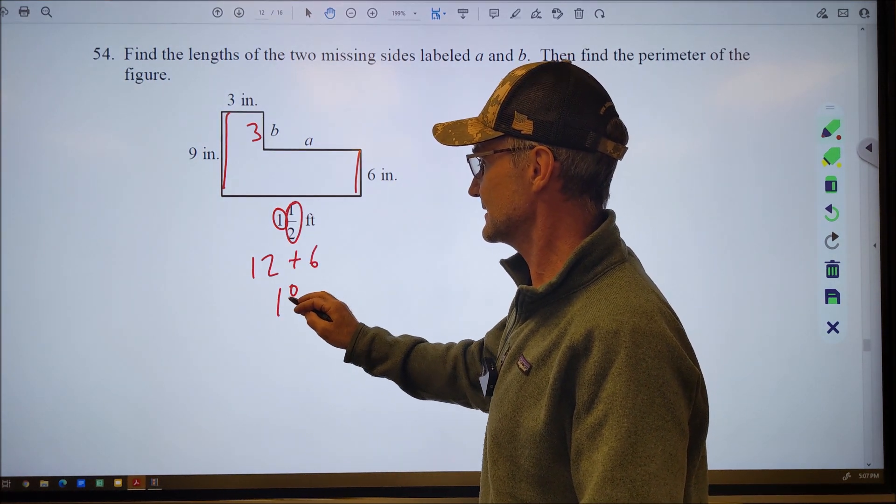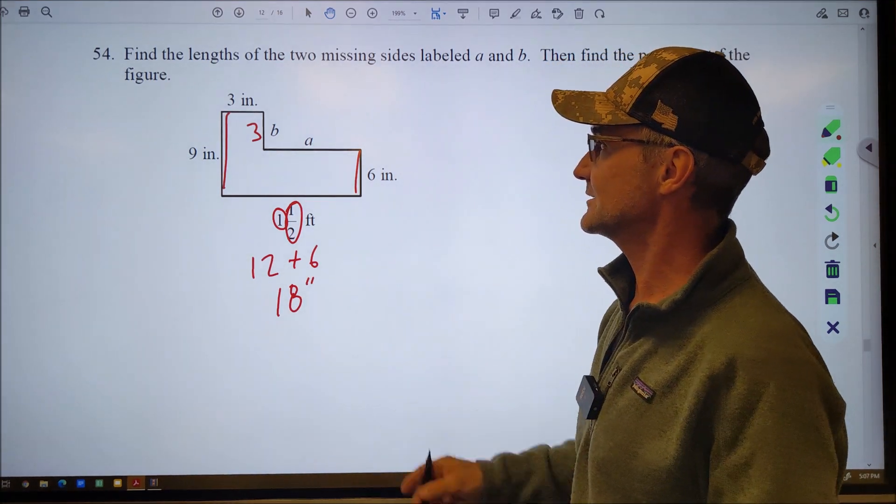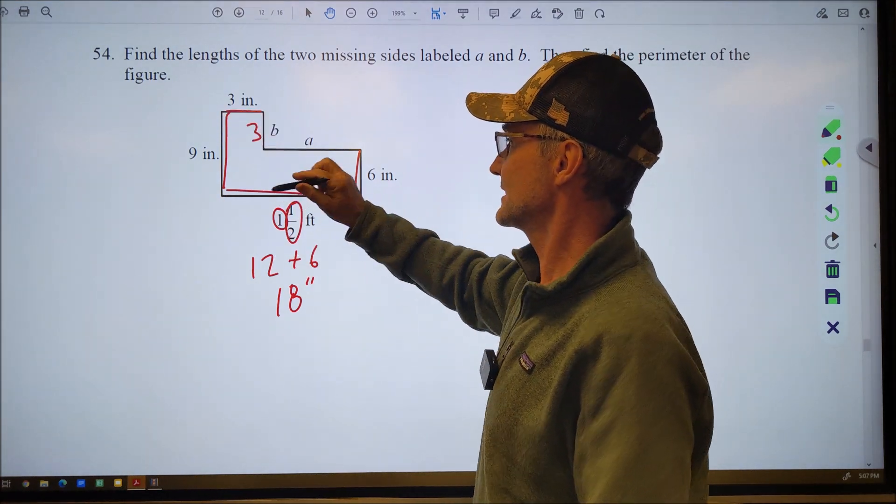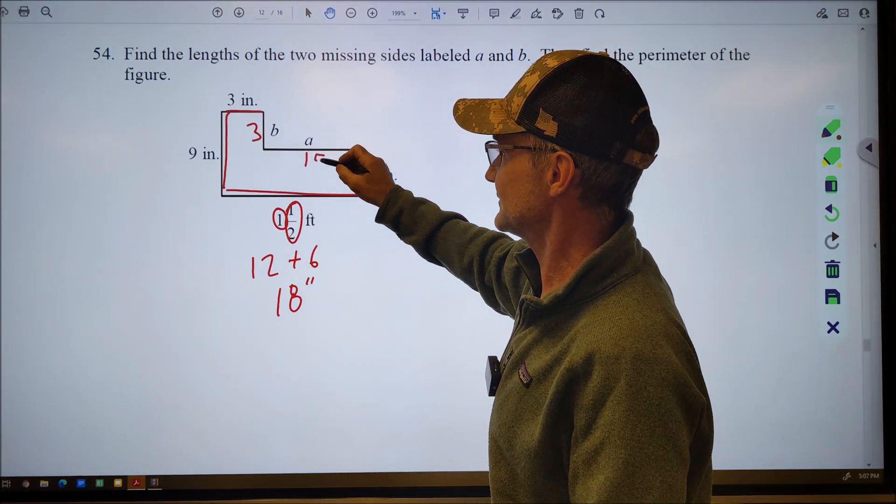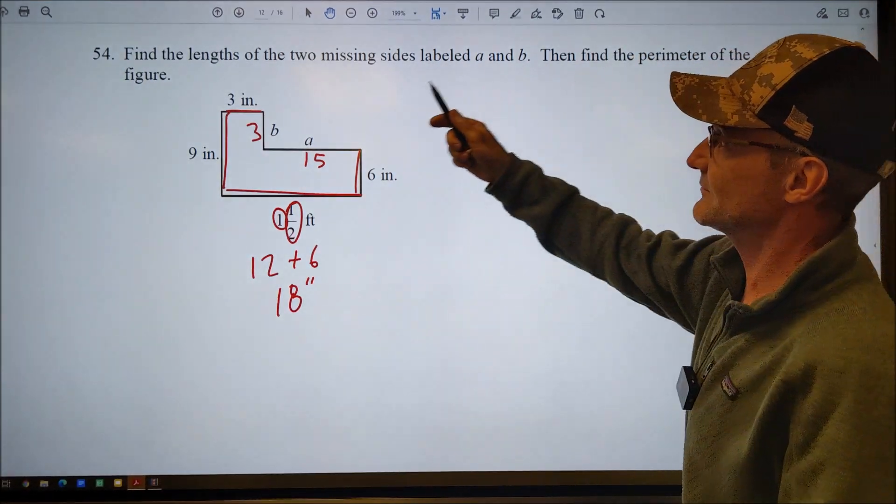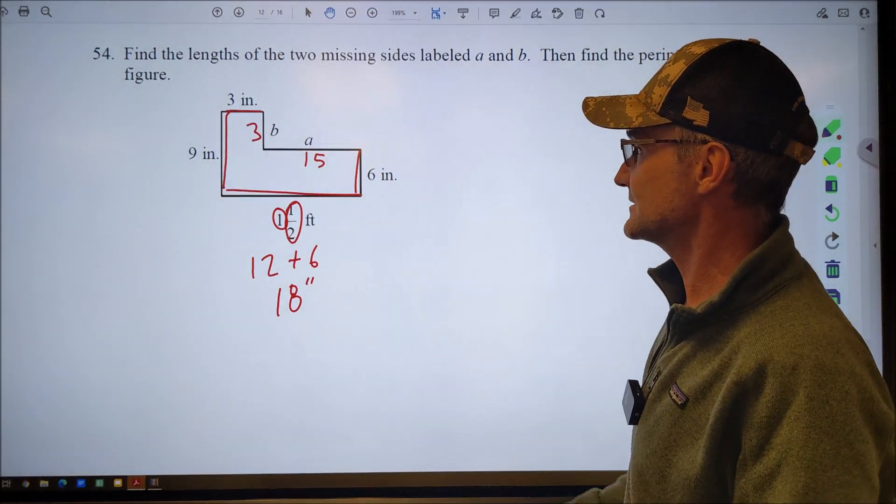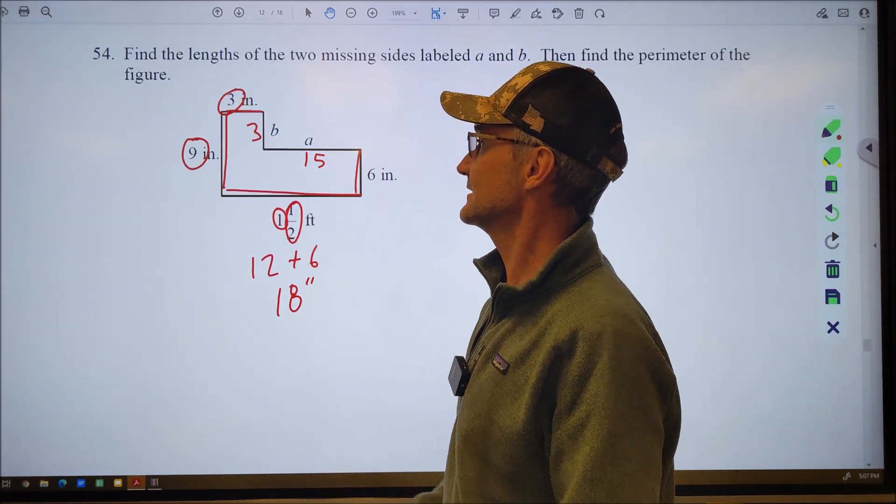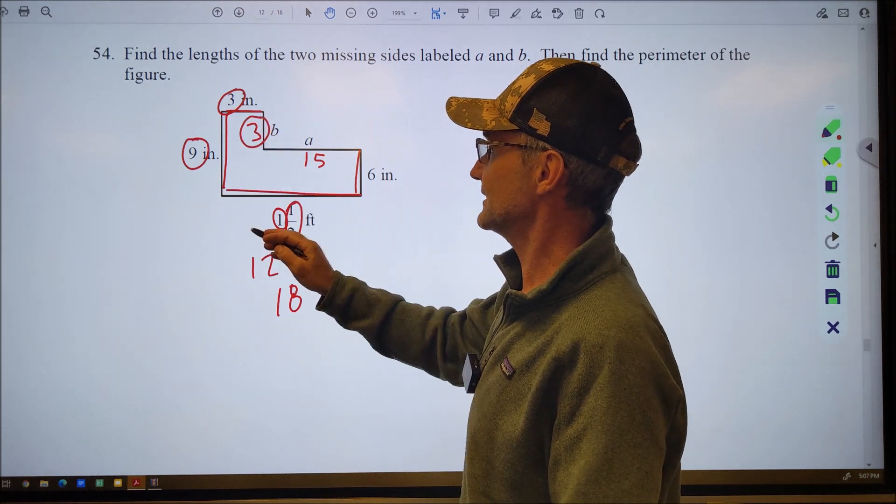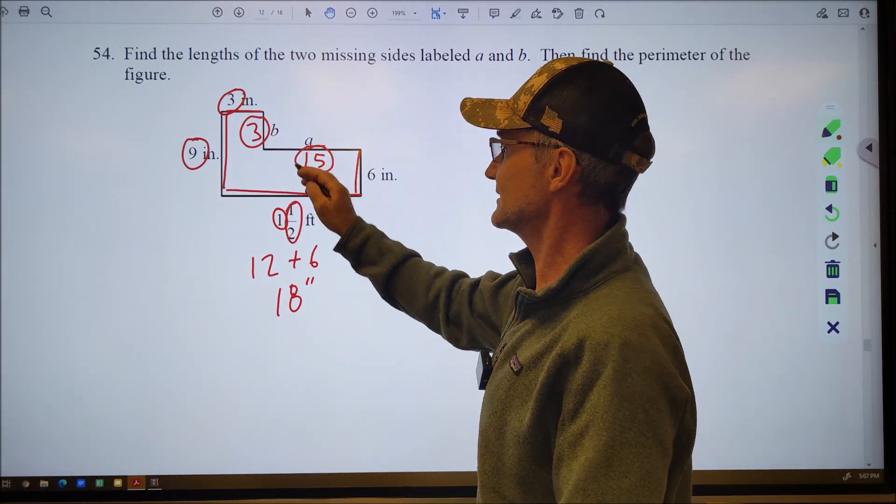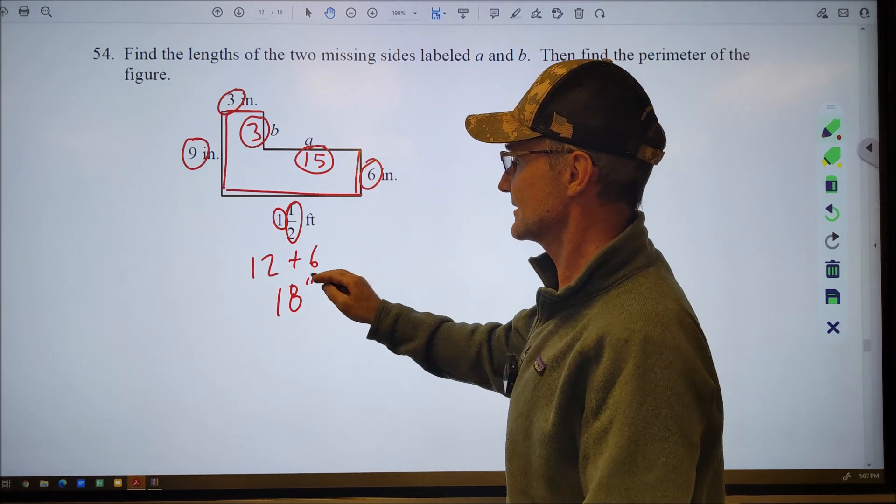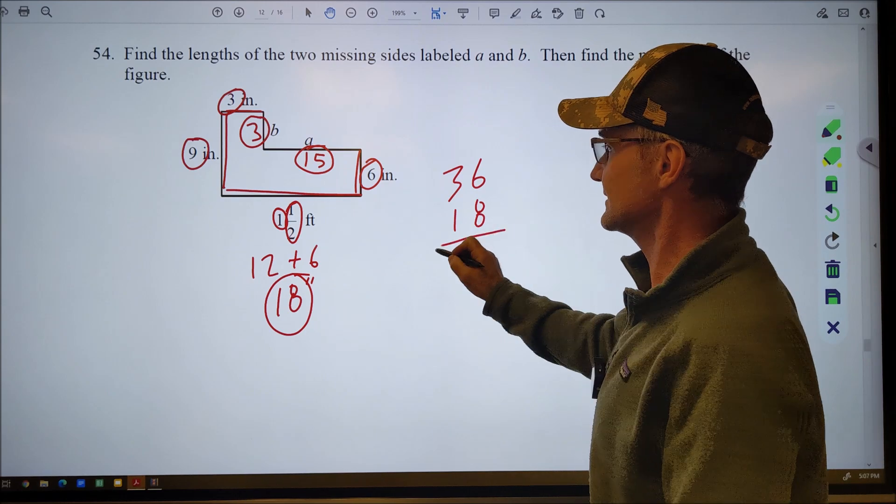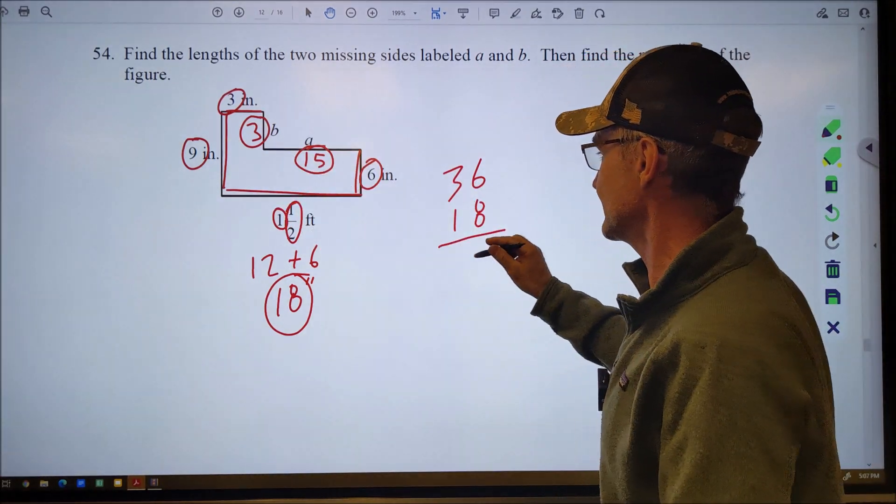I want all the same units. So this is 18 inches. This is three inches. So part A is 15 inches. Then find the perimeter of the figure. It doesn't say inches or feet. So we'll stick with inches. I have nine plus three, 12 plus three, 15 plus 15, 30, 36, 36 and 18. 36 and 18 will give me the number of inches all the way around.